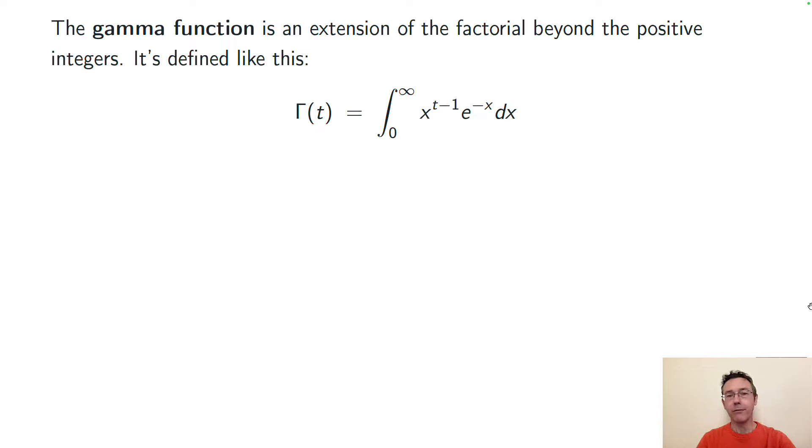Here's the formal definition. It's the integral from 0 to infinity x to the t minus 1 e to the negative x dx. Here t is that variable, the thing that you're actually plugging into the gamma function. X is just a dummy variable that only lives inside of that integral.